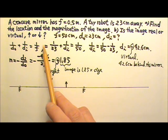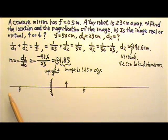Even though we could solve the problem with only equations, let's do some ray tracing just for practice. So here I have the concave mirror. The focal length is 50 centimeters. So this is 50 centimeters. And the toy robot, the object, is 23 centimeters away.